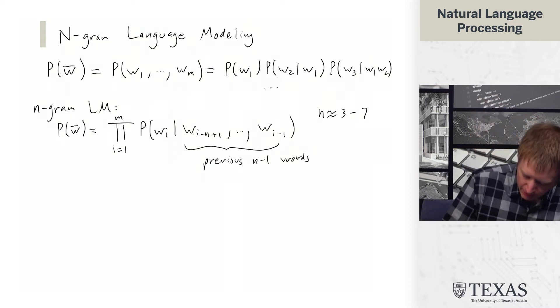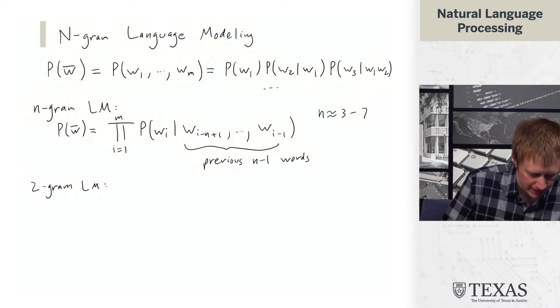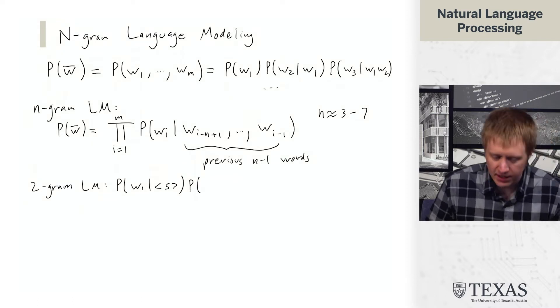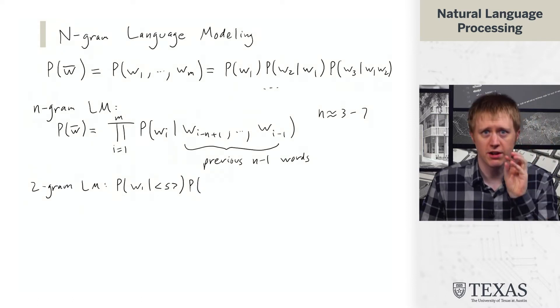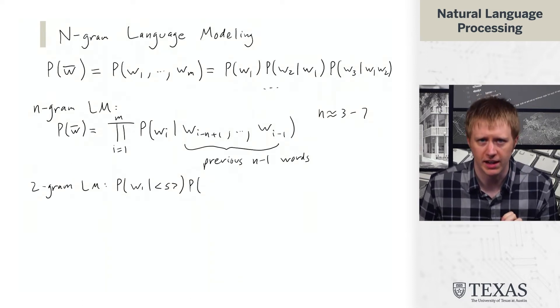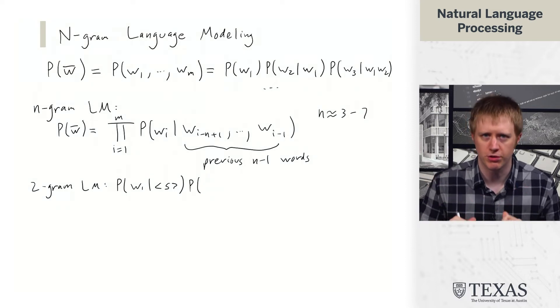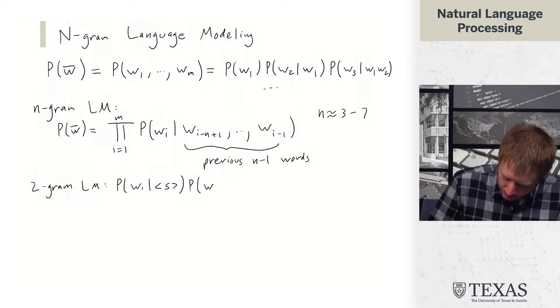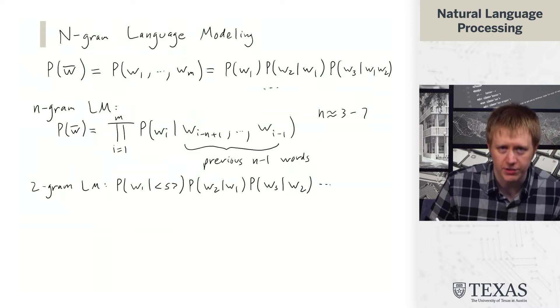So let me just illustrate what a 2-gram LM looks like. We're going to use this bracket s as a start of sentence symbol here. So when we generate the first word, I'm just going to write it that we condition on a start of sentence symbol rather than having a separate distribution over words here. This way just everything looks like 2-grams.